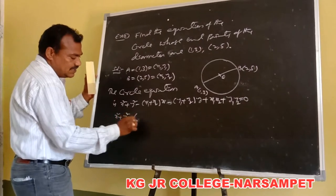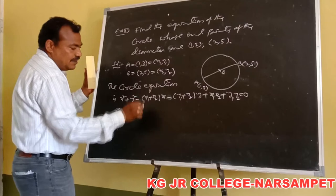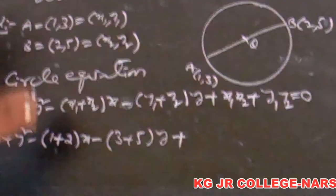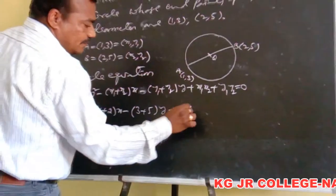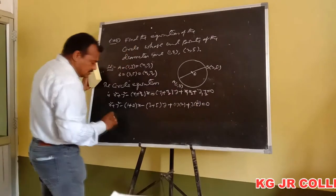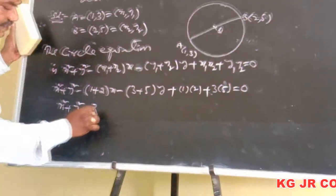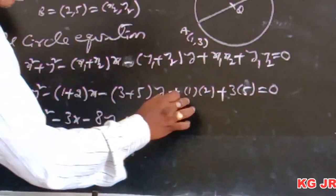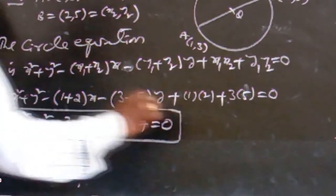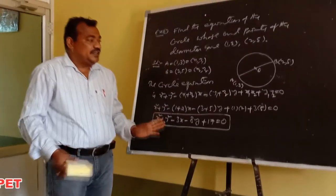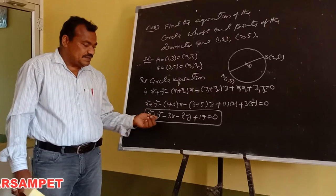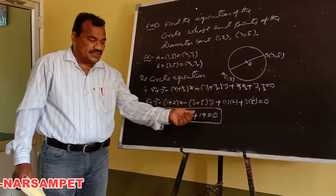The circle equation is x² + y² − (x1 + x2)x − (y1 + y2)y + x1·x2 + y1·y2 = 0. Substituting: x1 + x2 = 1 + 2 = 3, y1 + y2 = 3 + 5 = 8, x1·x2 = 1 × 2 = 2, y1·y2 = 3 × 5 = 15. So 2 + 15 = 17. The required circle equation is x² + y² − 3x − 8y + 17 = 0.